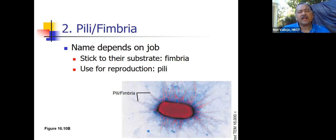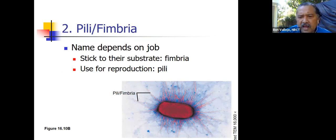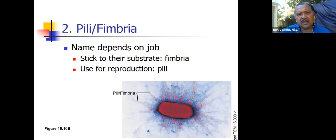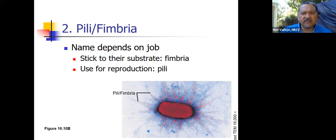Here's the pilus and fimbriae. Again, the name depends on the job. You can see in the photograph that there are many fimbriae. But if a fimbrium is used for reproduction, then we call it a pilus. These are the plural forms: fimbriae and pili; and singular: fimbrium and pilus.